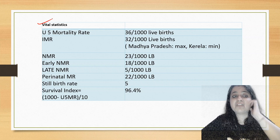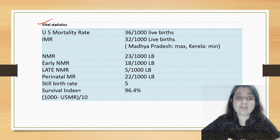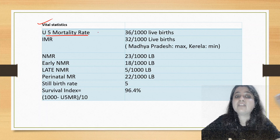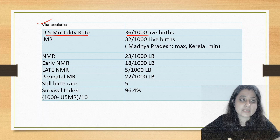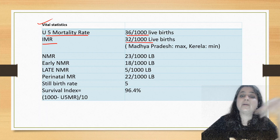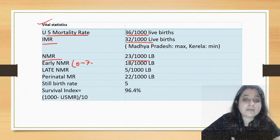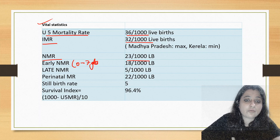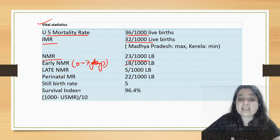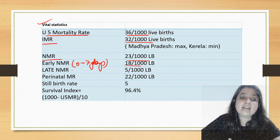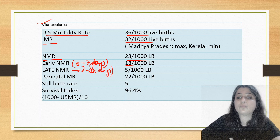Now for the most important vital statistics: under-5 mortality rate is currently 36 per 1000 live births. Infant mortality rate is 32 per 1000 live births. Neonatal mortality rate is 23 per 1000 live births. Early neonatal deaths — that is deaths in the first 0 to 7 days of life — are 18 per 1000 live births.